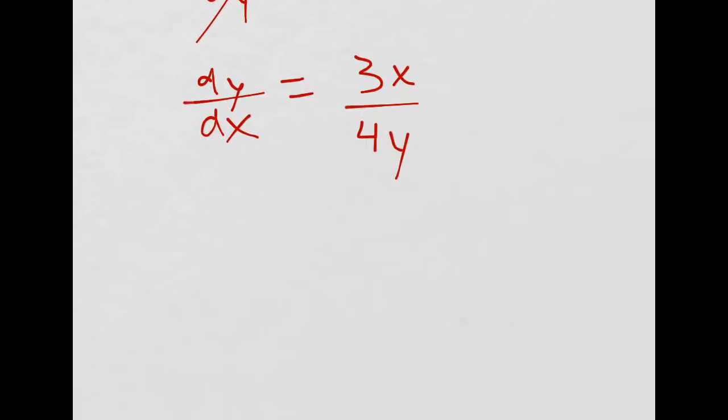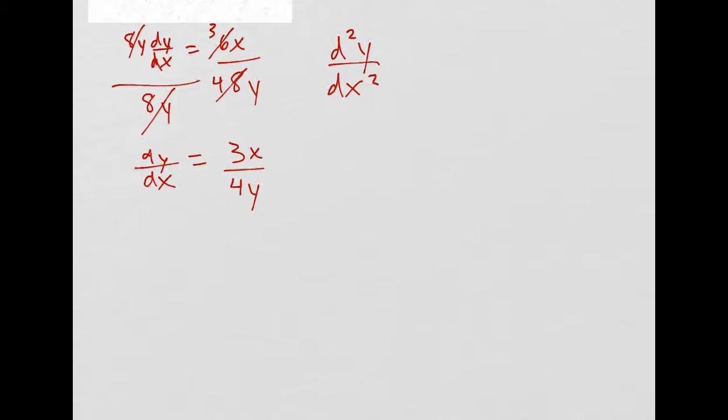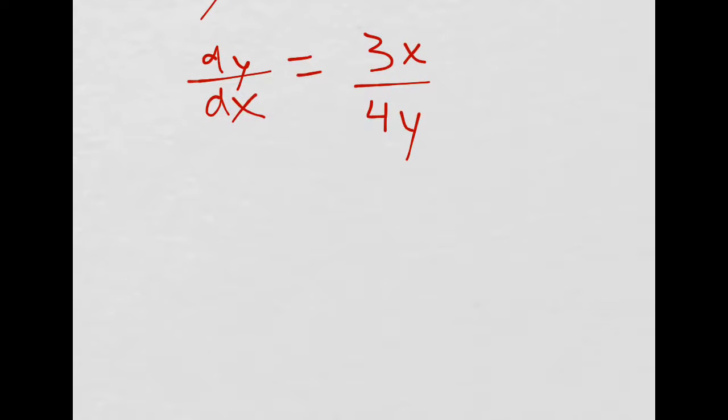And then here we're trying to find d squared y, dx squared, that's the second derivative, so we'll use the quotient rule. So d squared y, dx squared.